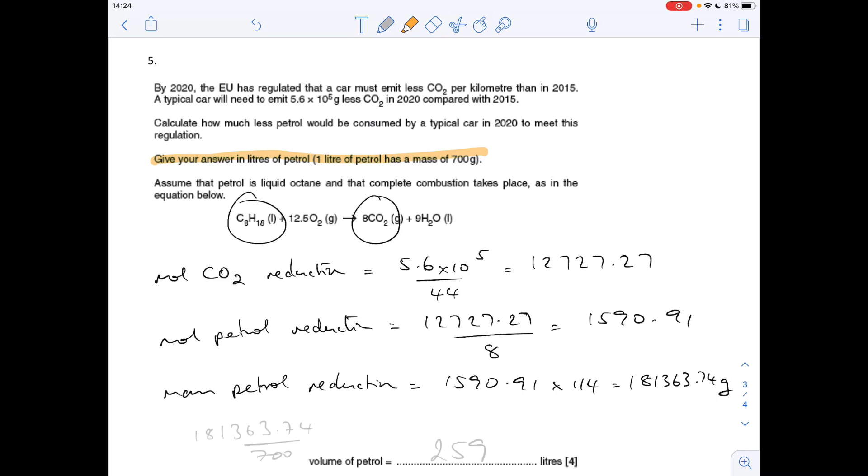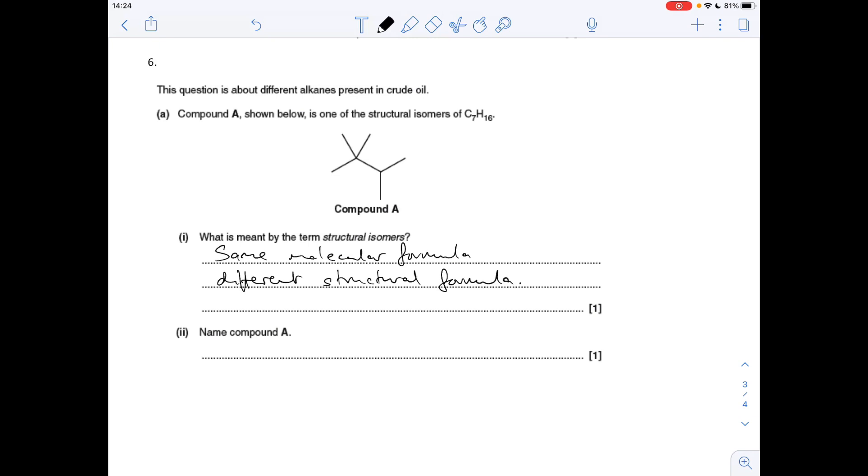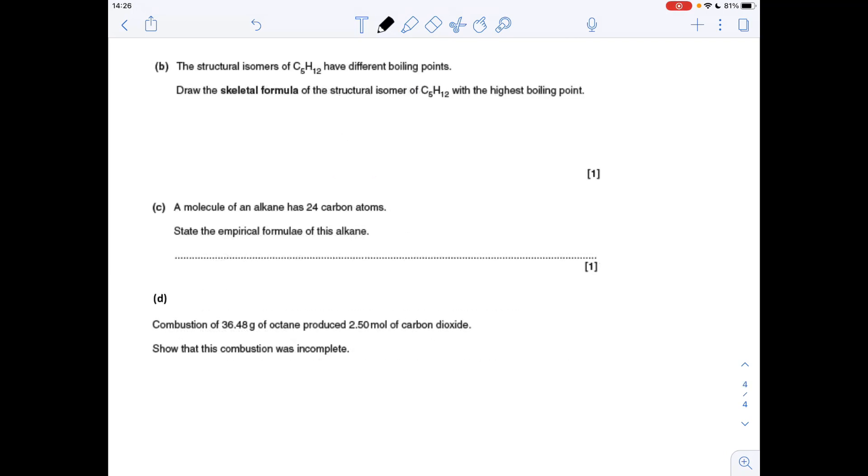First part of question six: we're just going to give the definition for structural isomers - same molecular formula, different structural formula - and the name of compound A. The longest continuous carbon chain is four long, and then we've got three methyl groups, so it's going to be a trimethylbutane. We've got two on carbon number two and we've got another one on carbon number three, so this will be called 2,2,3-trimethylbutane.